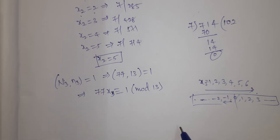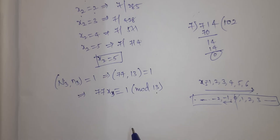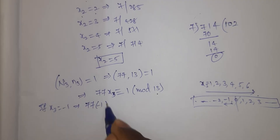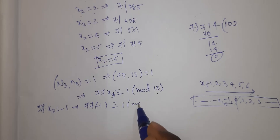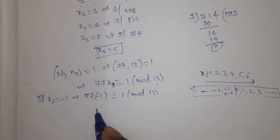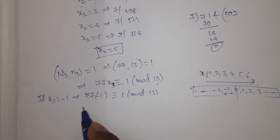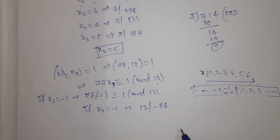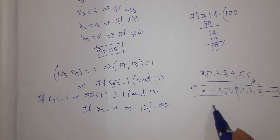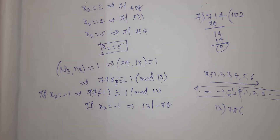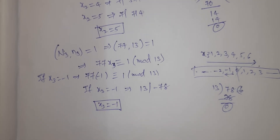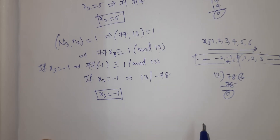Testing x3 = -1: 77·(-1) = -77 ≡ ? mod 13. Check: -77 - 1 = -78, and 13 divides -78 (since -78/13 = -6, remainder 0). So x3 = -1. This is clear — if the value is negative, no problem.